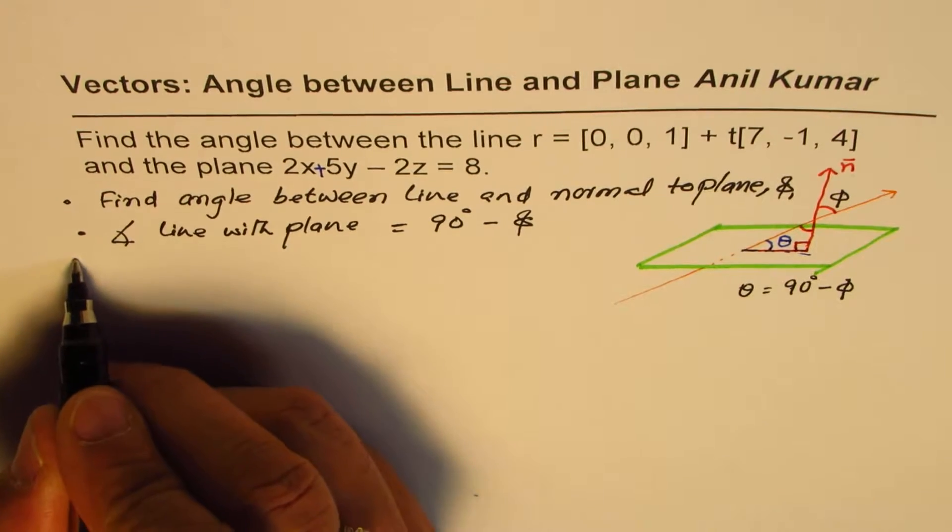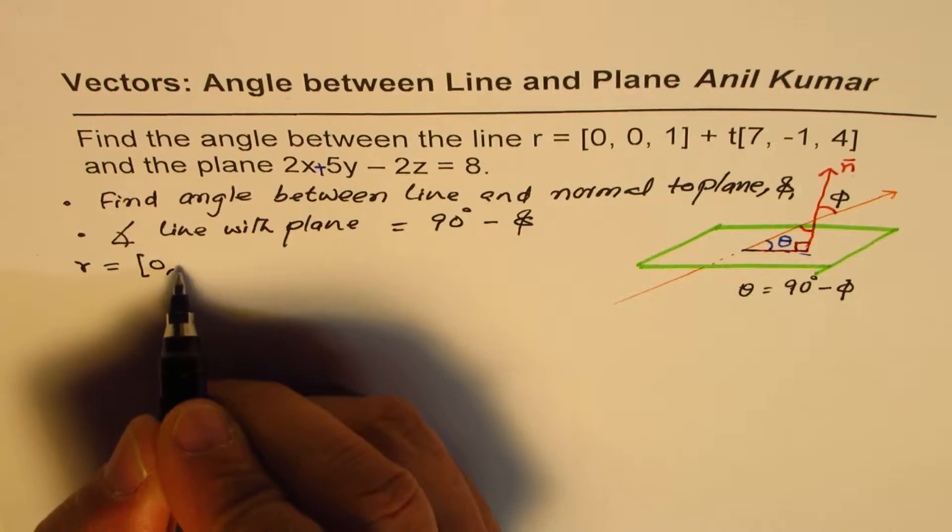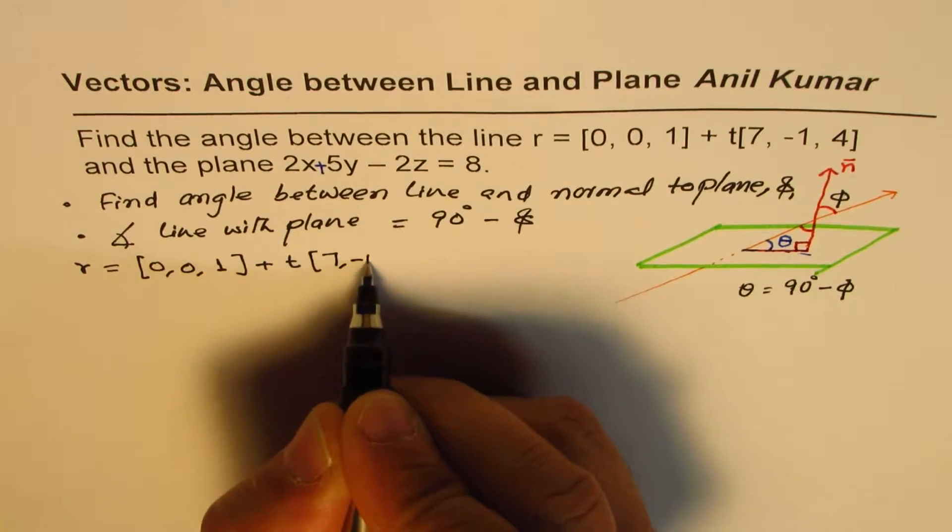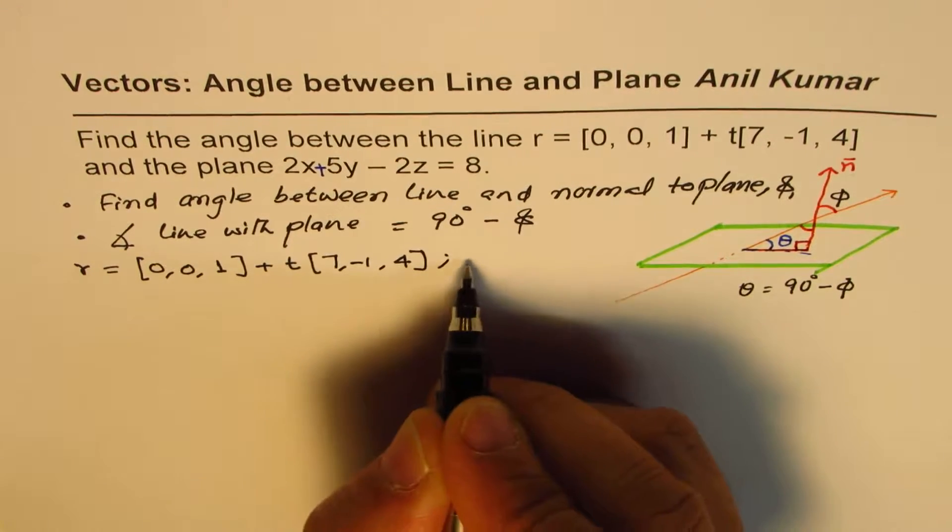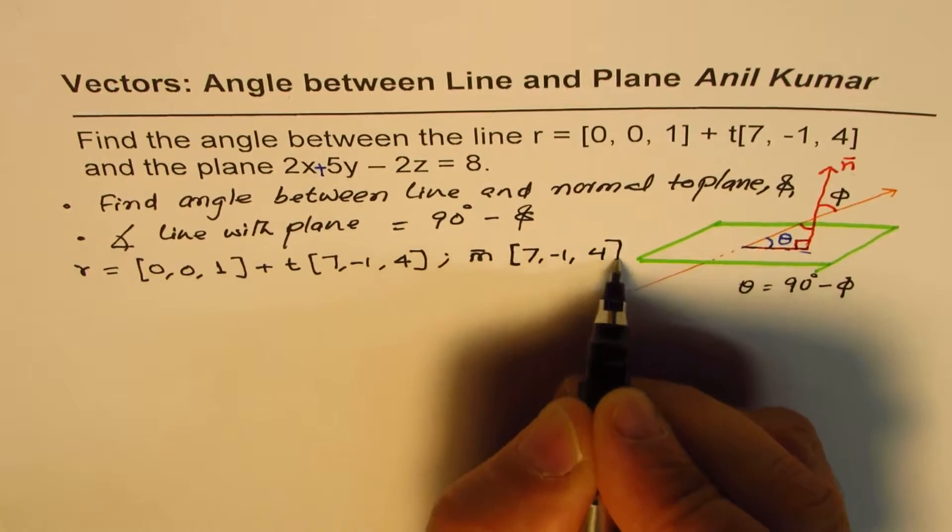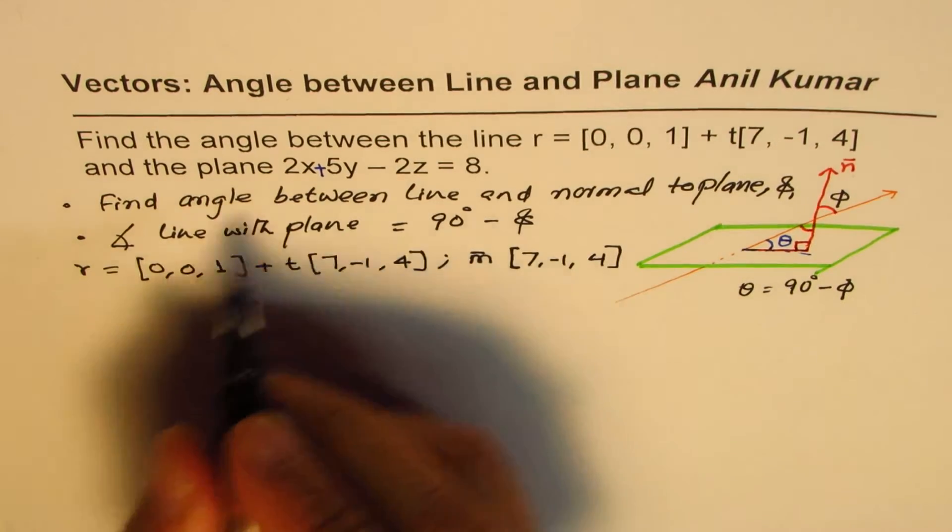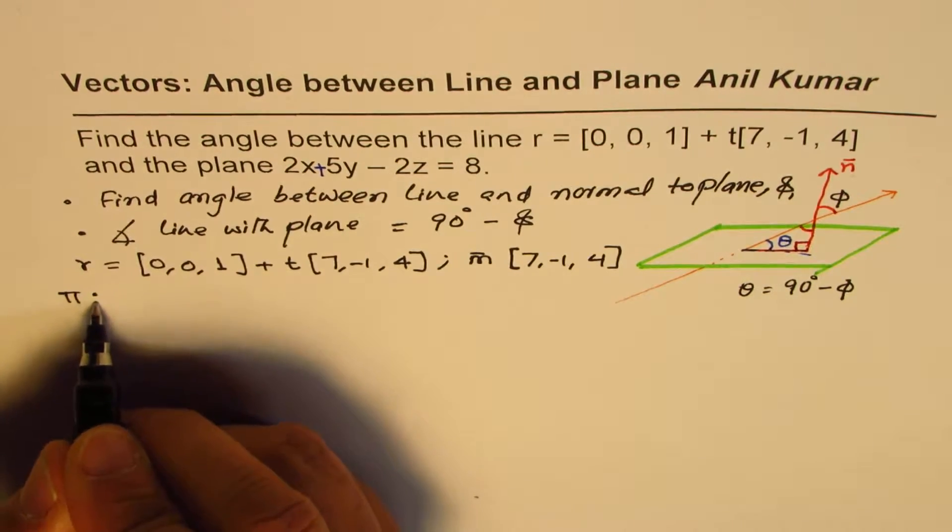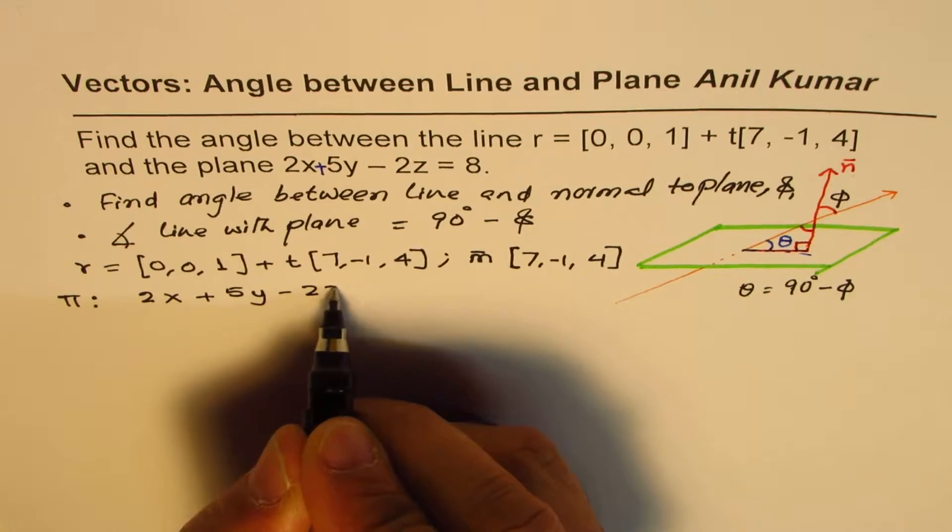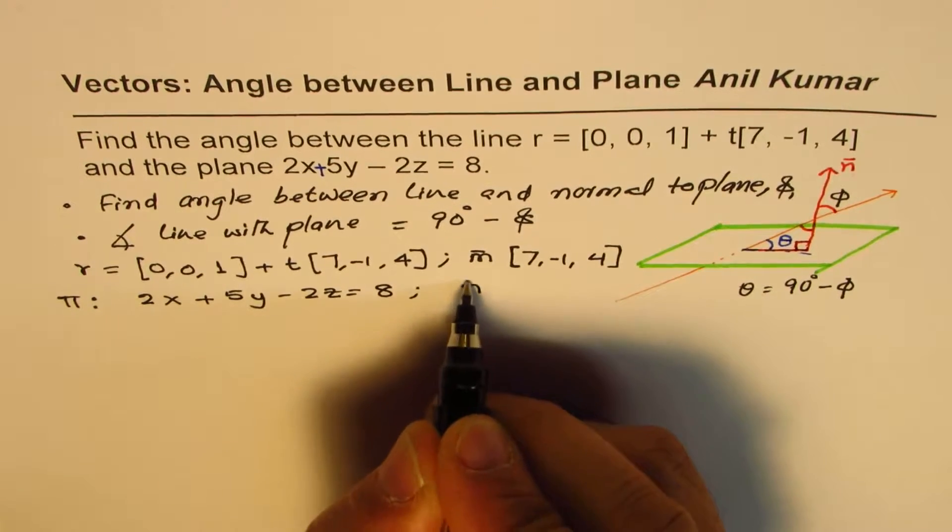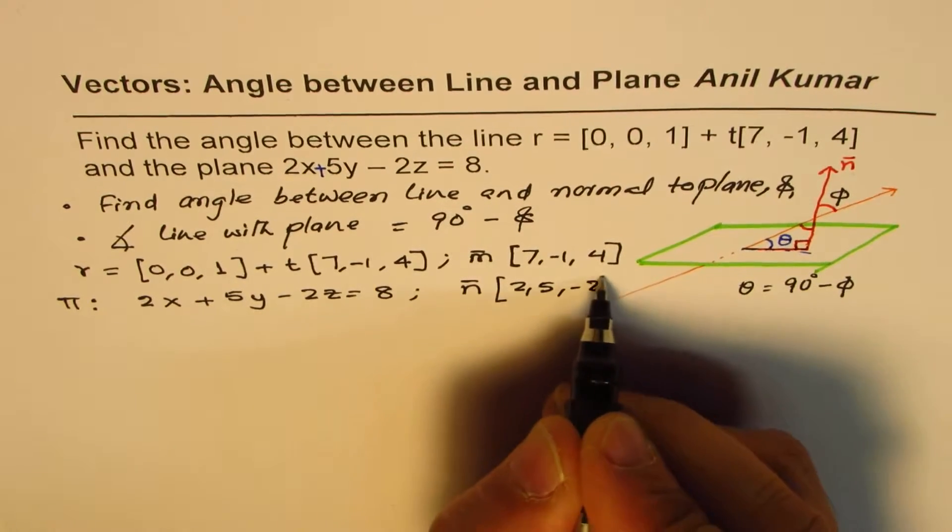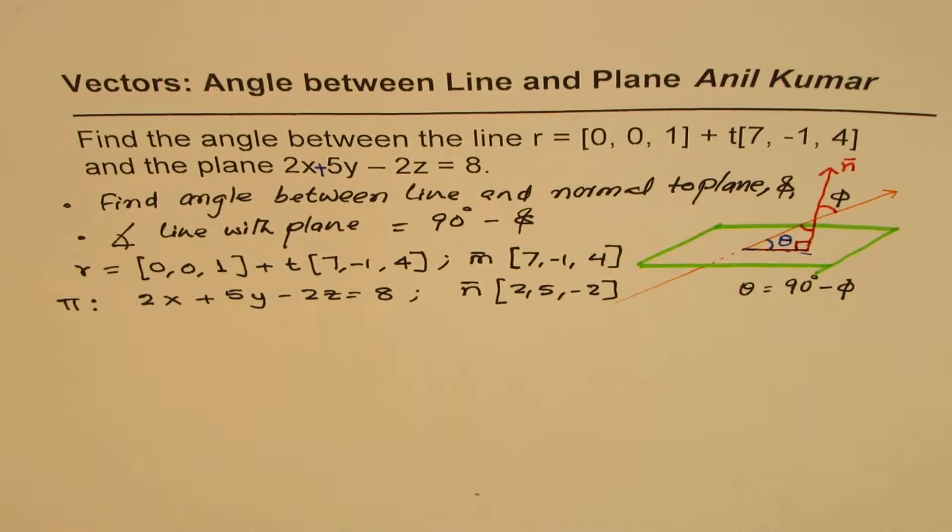So what we are given here is the line which equals this point [0, 0, 1] plus t times [7, -1, 4]. So the direction M is [7, -1, 4]. As far as the plane is concerned, we are given plane π: 2x + 5y - 2z = 8. So the normal N in this case is [2, 5, -2]. So we need to find the angle between them.